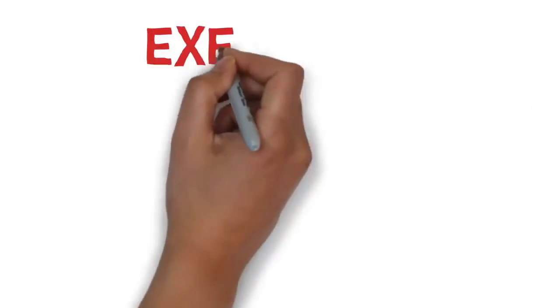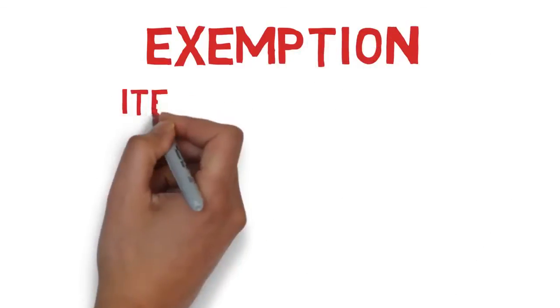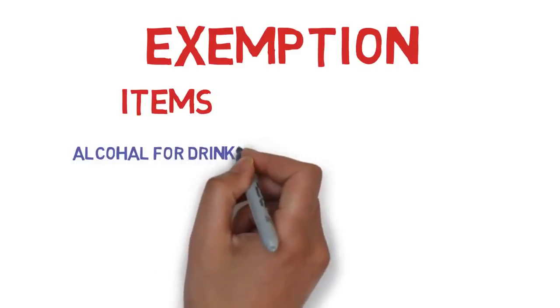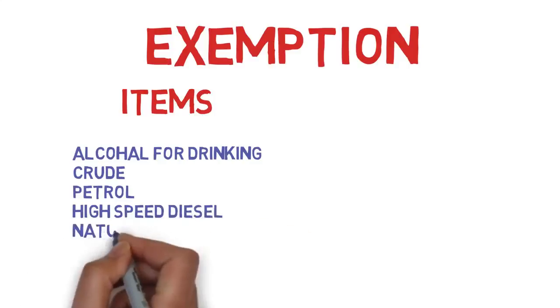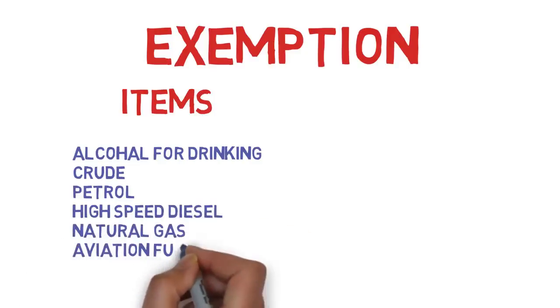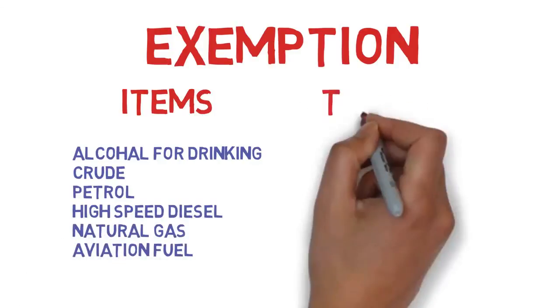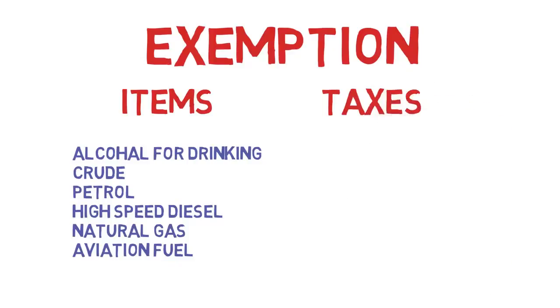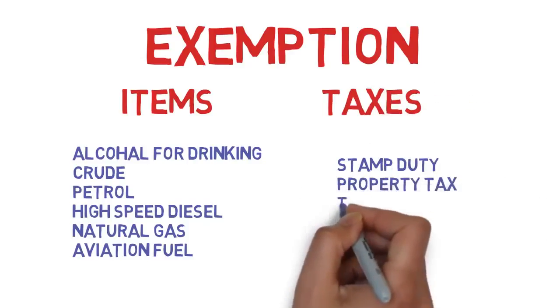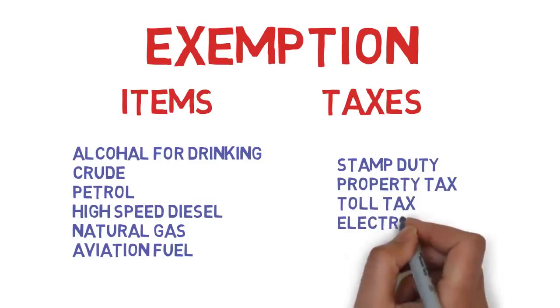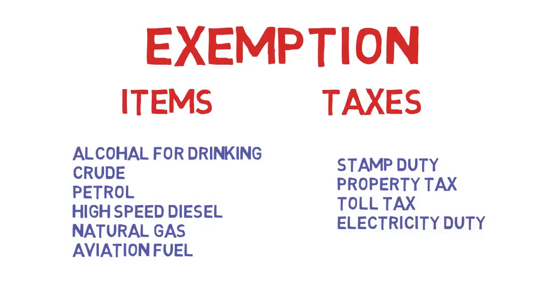Some items are exempted from GST: alcohol for human consumption, and petroleum products like crude petrol, high speed diesel, natural gas, and aviation turbine fuel. Some taxes are also exempted: stamp duty, property tax, toll tax, electricity duty, etc. Thank you for watching this video — please share and like.